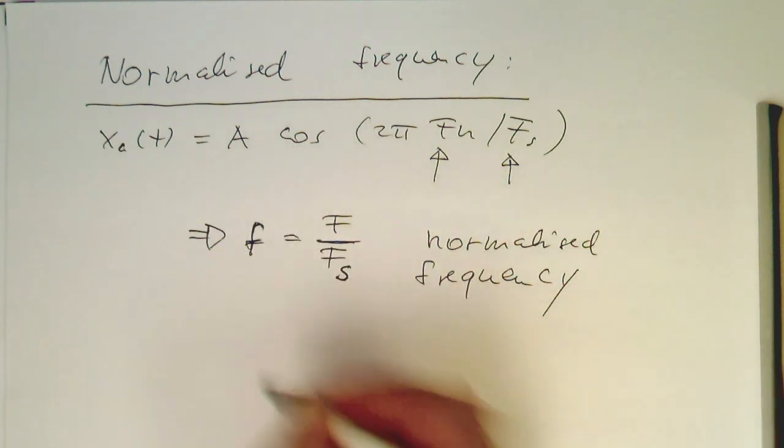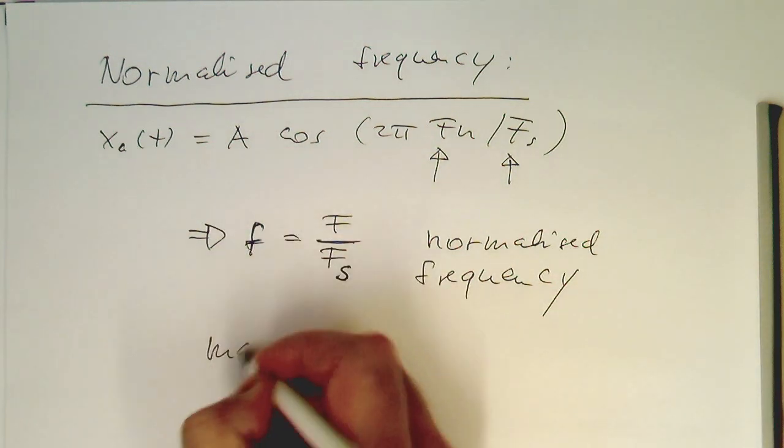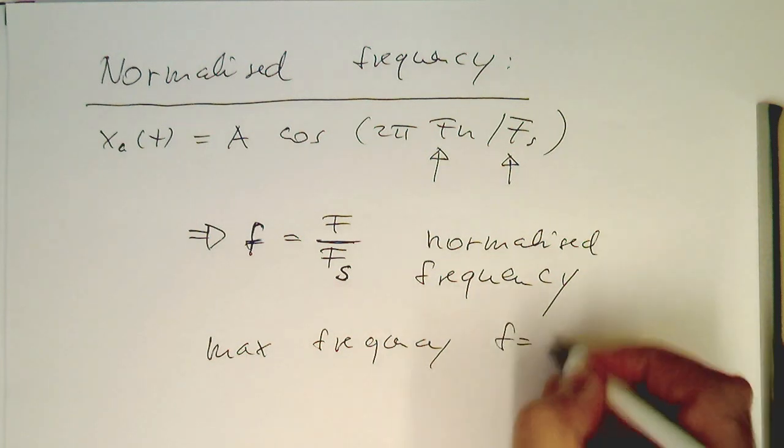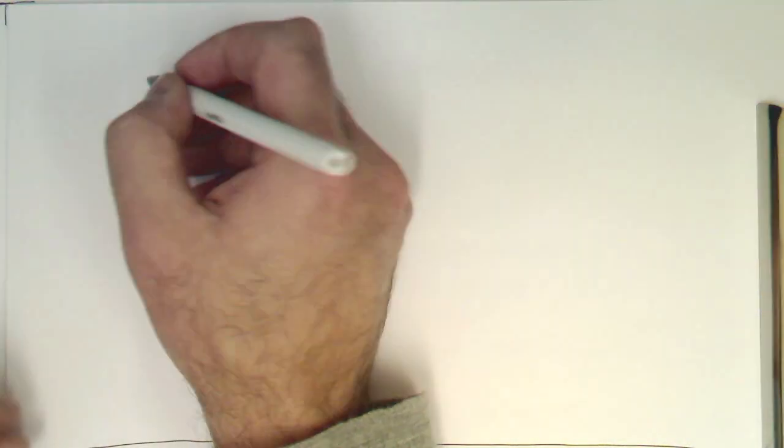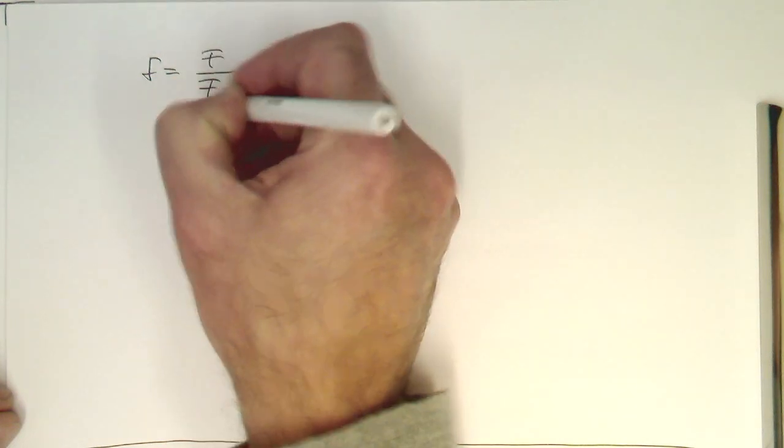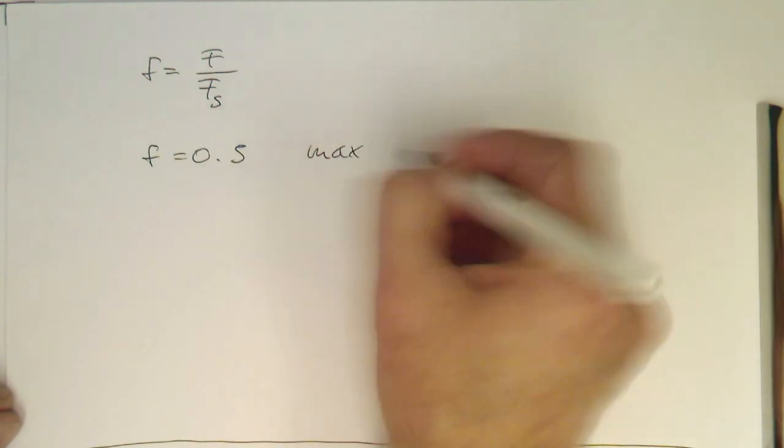So let's test this, that if maximum frequency is then f 0.5. So let's test if this actually works. So let's just write this down here again. So that's our f over fs. So f equals 0.5 is the maximum frequency.